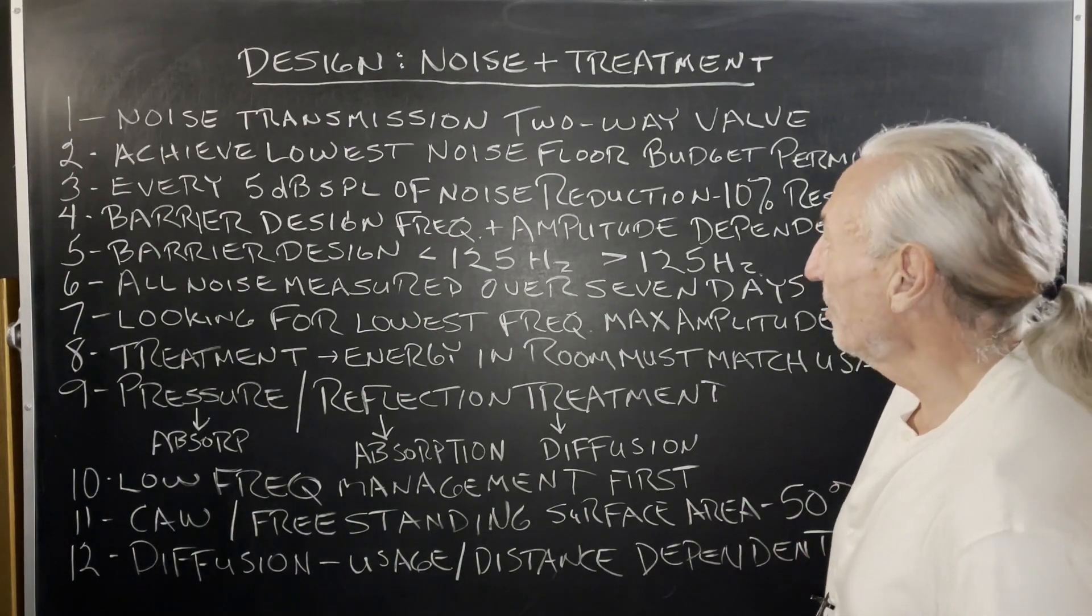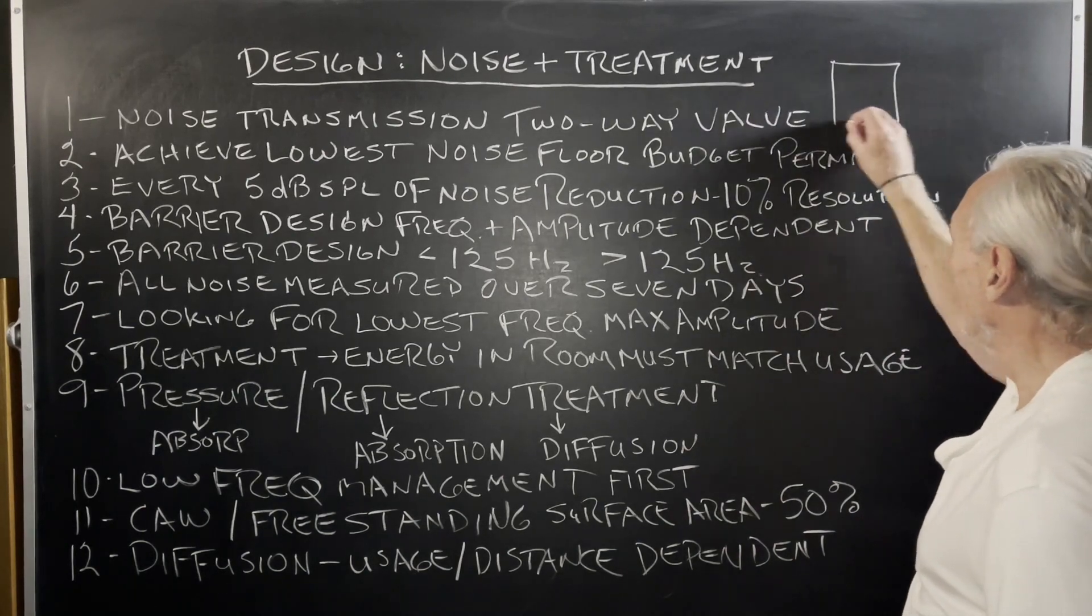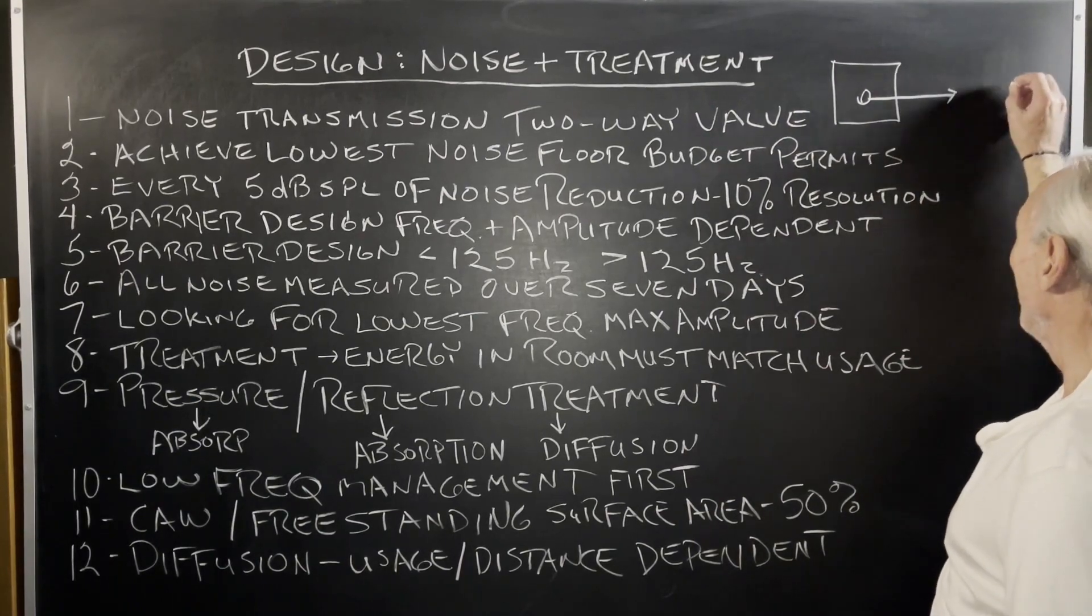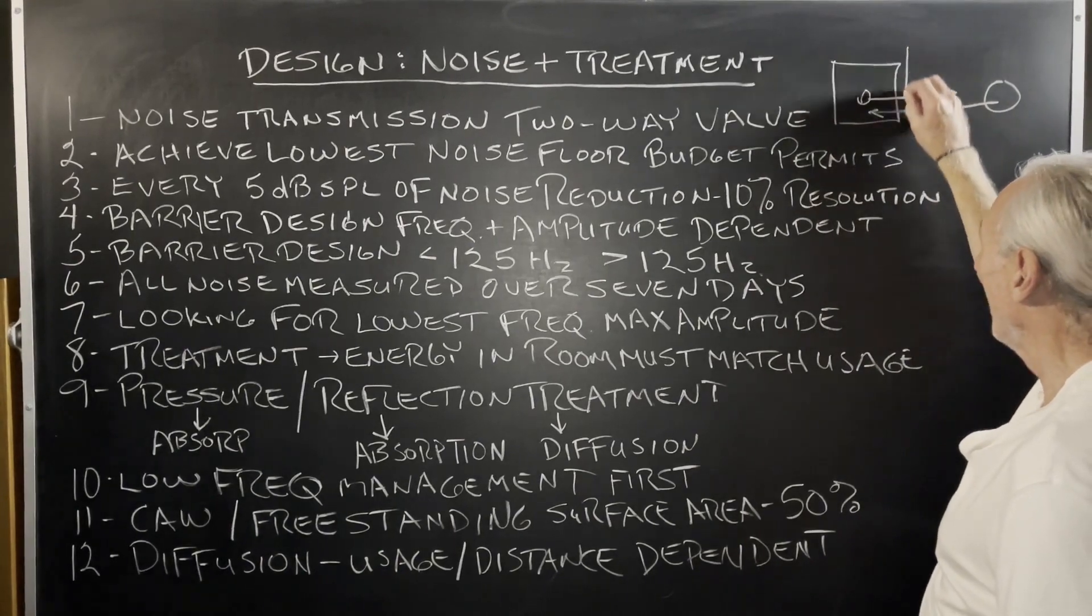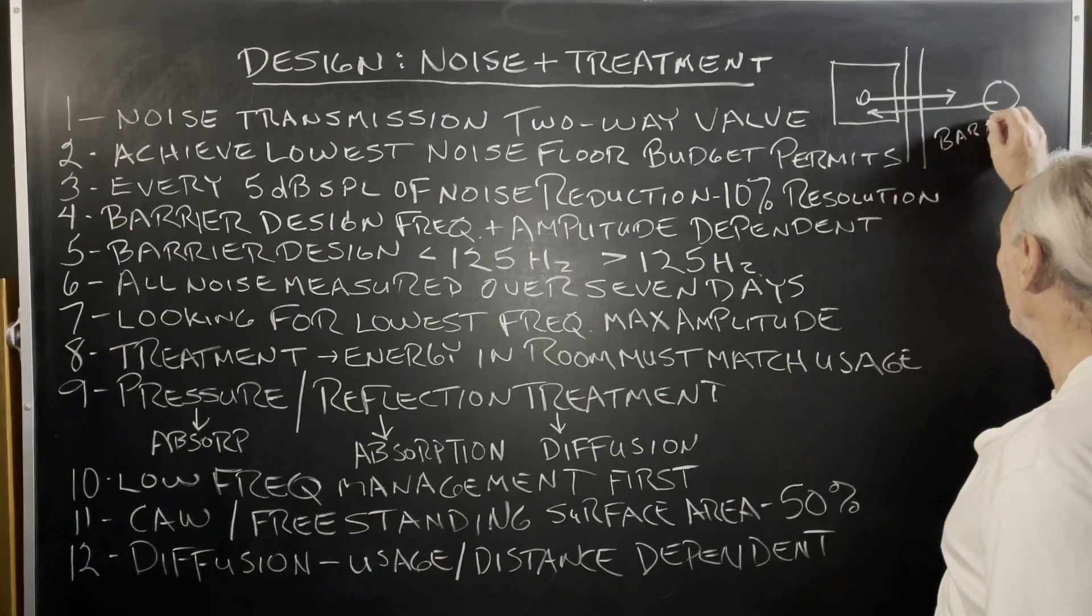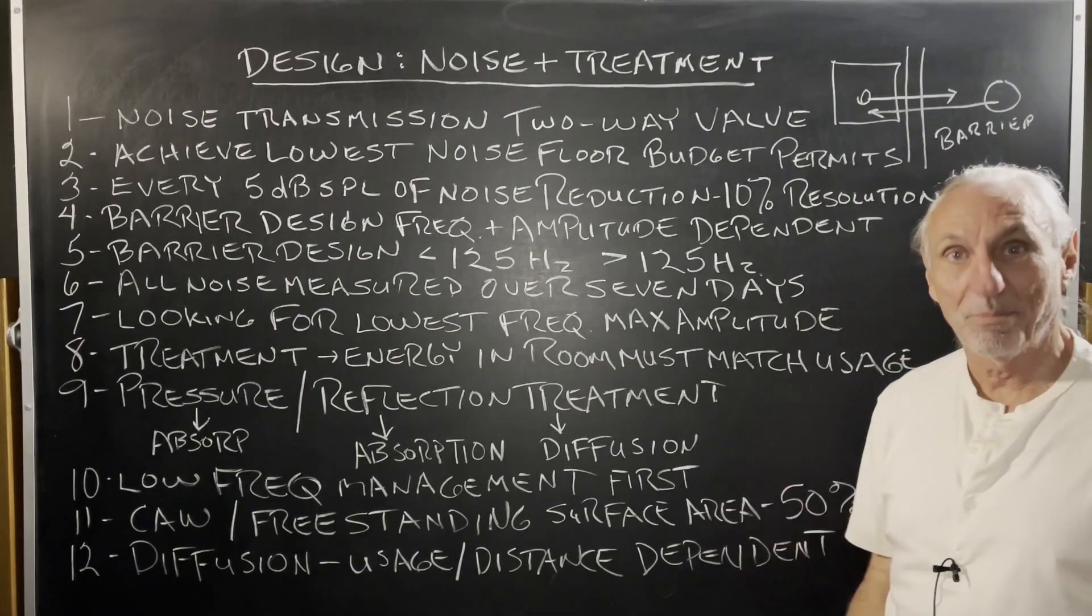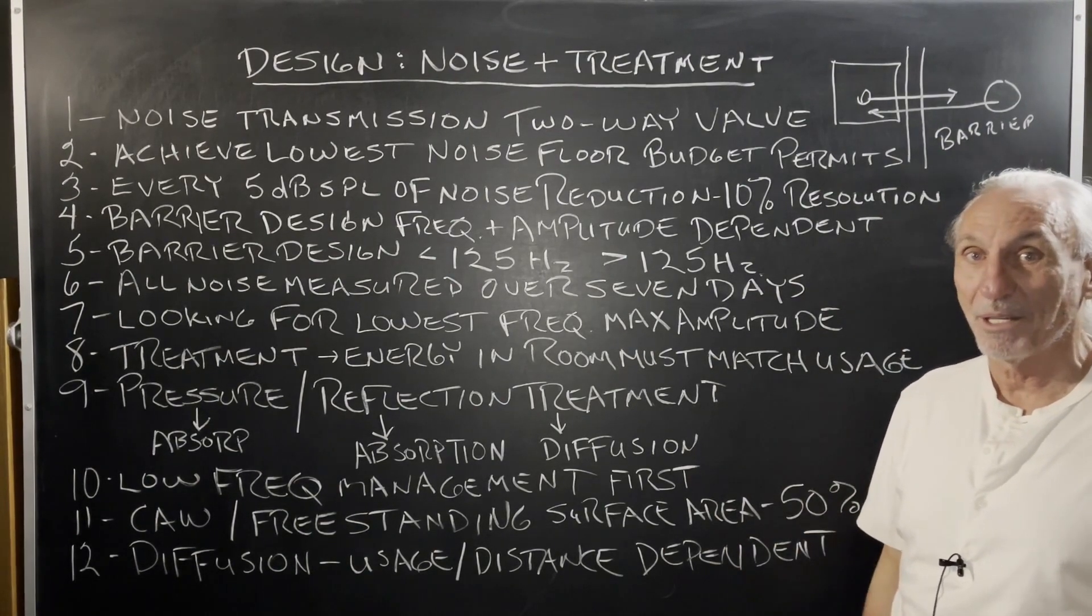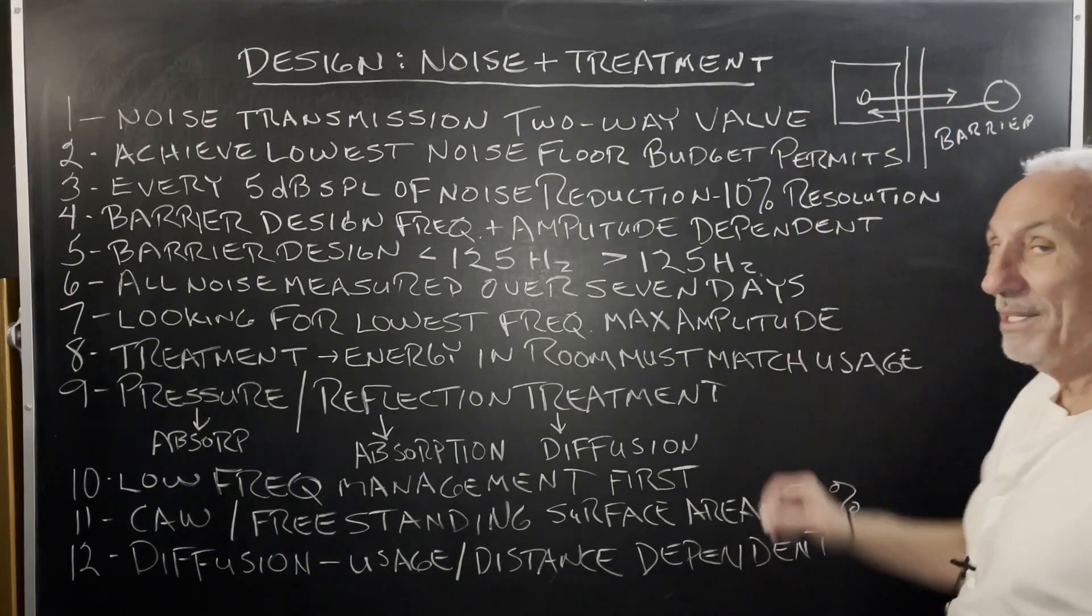Noise transmission is kind of a two-way valve. If you have a room and you're generating energy in the room, that energy is going to leave the room. And if you have an energy source outside the room, that energy is going to get in the room. And the way we stop that is we erect a barrier, right? That's the term we have to use. The barrier has particular requirements based on the frequency and amplitude of the noise. That's another issue people get confused about. But the goal here is noise.